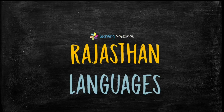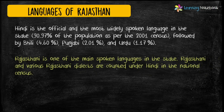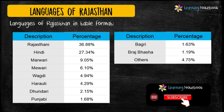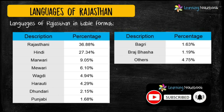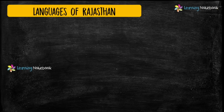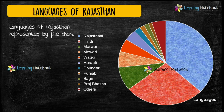Next idea is including languages of Rajasthan in your art integrated project. Again, you can take help of a pie chart to show different languages of Rajasthan for your maths art integrated project.